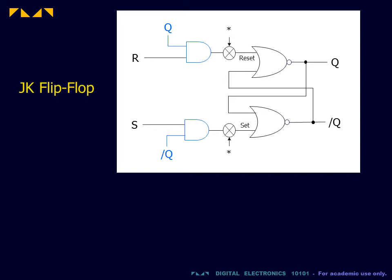The JK flip-flop assigns a new function, a triggered inversion, to the unused S equals 1, R equals 1 states. This is achieved by feeding the Q output back to the triggered reset input and Q bar to the triggered set input.